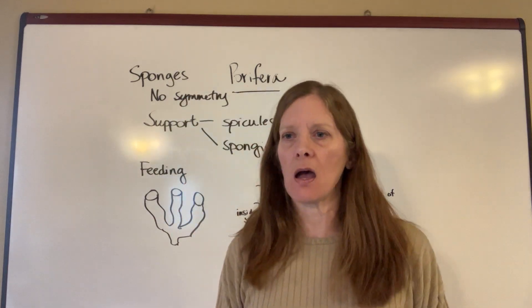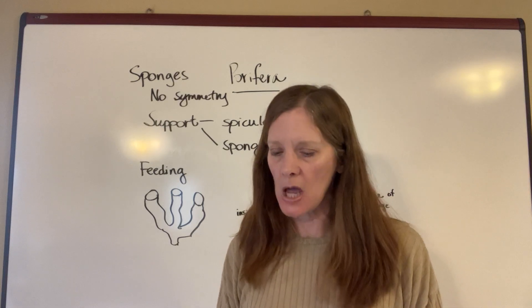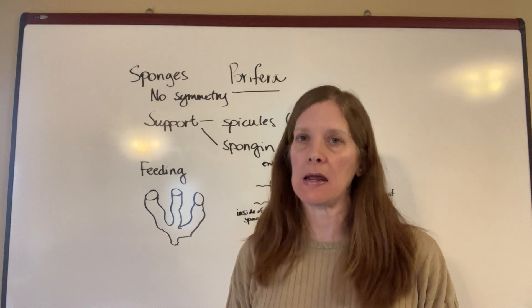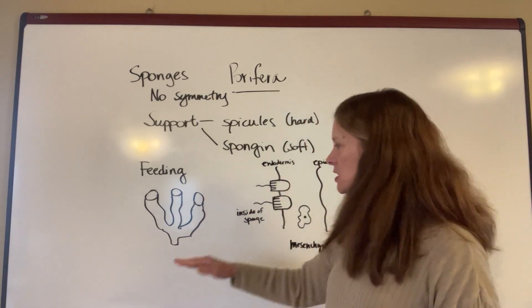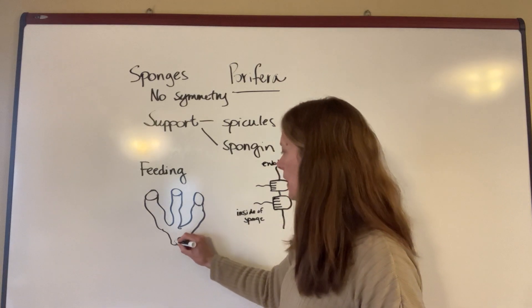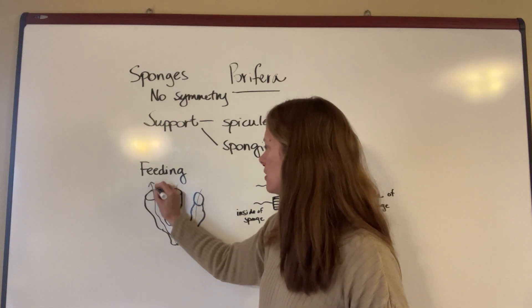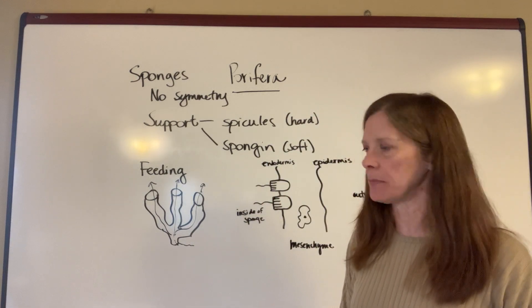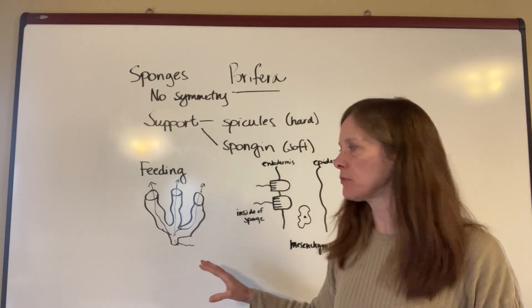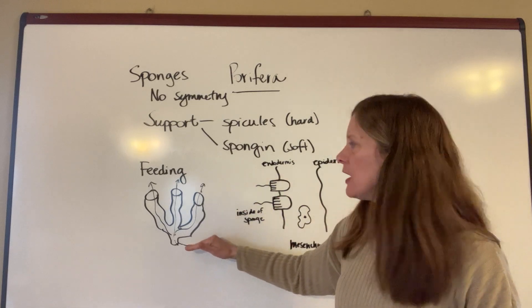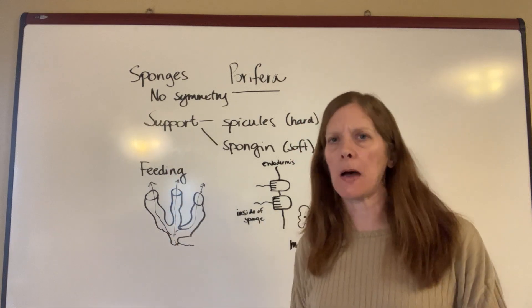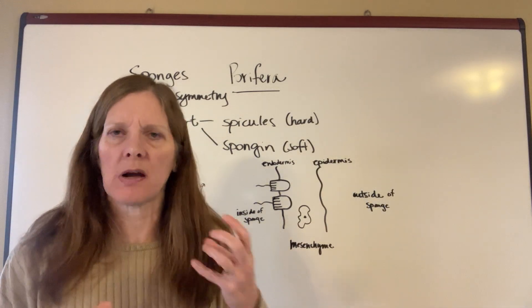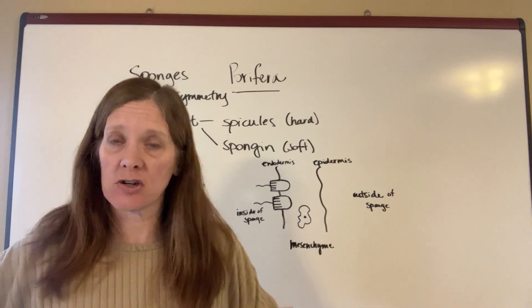I want to talk about the feeding of sponges because it's fascinating how it works. I gave you a coloring sheet which will show you the water flow through the sponge, and one of the videos I linked you to will also show how this works. Sponges draw water in from the bottom and pump it up through and out the tops of the sponge. They beat that water through them with little cells that have flagella on them. In the video, dye is put in so you can see how the water gets pumped through and comes out the top. They do this because there are little pieces of plankton, microorganisms, and organic debris in that water, and the sponge takes that in and eats it.